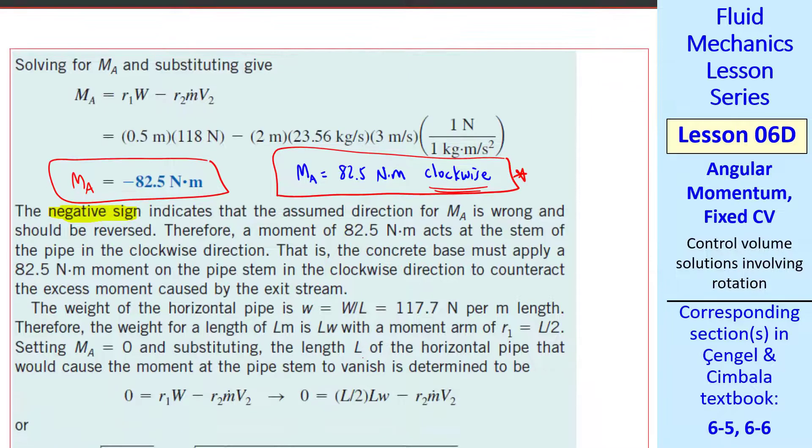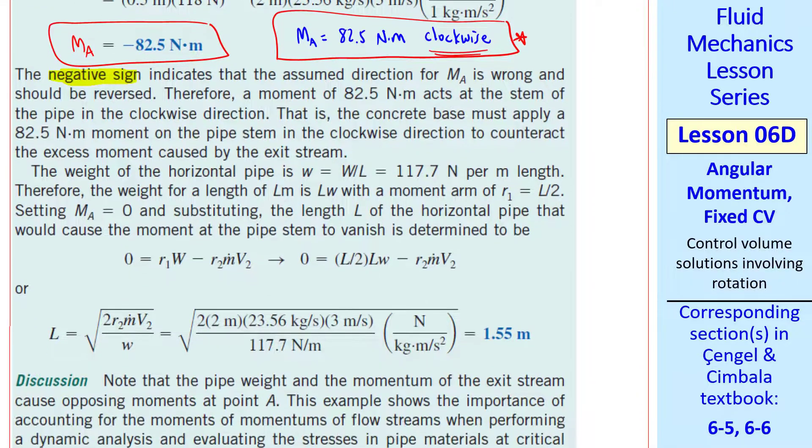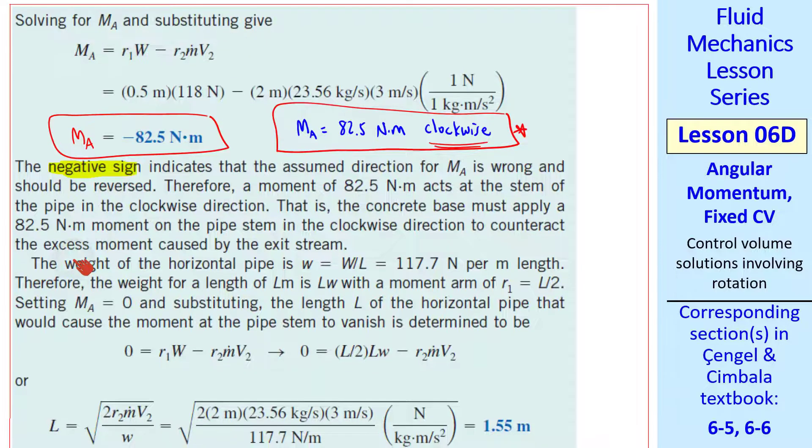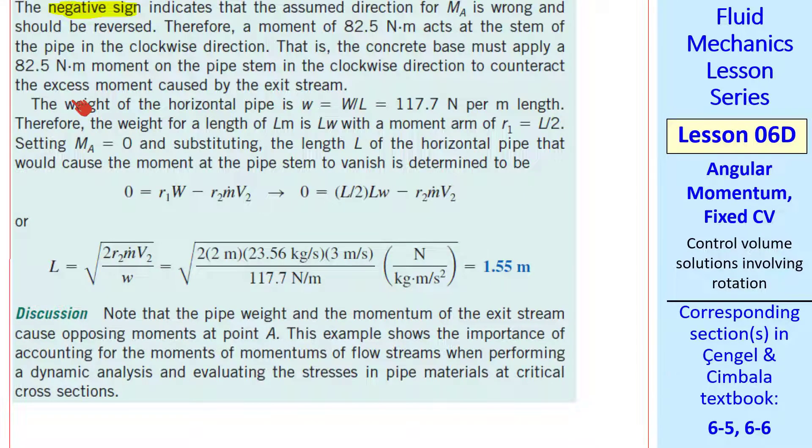Finally, since the weight and the jet moments are kind of fighting each other, there will be a weight of that pipe where its moment will just balance the moment of the jet. We want to find that weight such that MA would be 0. In other words, there's no net moment at the base of this pipe. We want to solve for length L of the horizontal pipe that causes that moment to vanish. We use the same equation here but set MA equals 0 and we solve for length L. Plugging in the numbers, we get 1.55 meters.